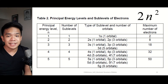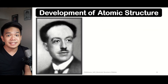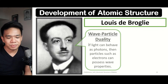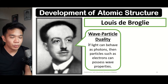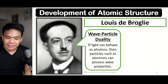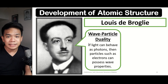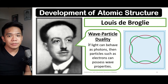However, there are some scientists who noted restrictions of the Bohr planetary model. One of these scientists is Louis de Broglie, who formulated the wave-particle duality of the electron. He said that if light can behave as photons, electrons can also possess different wave-like properties.